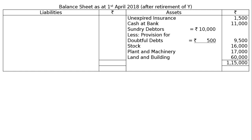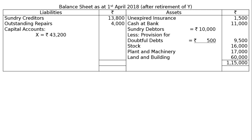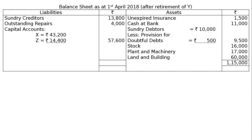Liability side: sundry creditors 13,800; outstanding repairs 4,000; capital accounts — X 43,200 and Z 14,400, totaling 57,600; Y's loan account 39,600. Balance sheet liability side totals 1,15,000. Both sides tally.